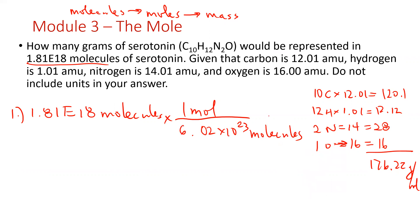So we're going to divide that by 6.02. So 1.81×10^18 divided by Avogadro's number, 6.02×10^23, and we get approximately 3.007×10^-6 moles of serotonin.